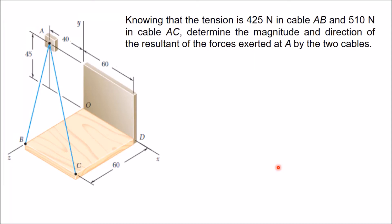We have already learned how to represent a force in space by a vector. Now in this video, I will explain how to determine the resultant of a concurrent force system in space. For that, I have taken one example from the book of Statics and Dynamics by Beer and Johnston.